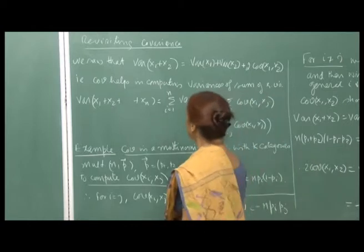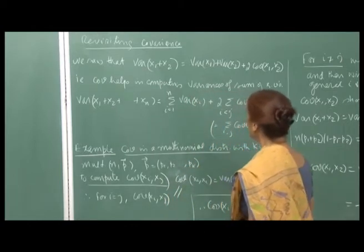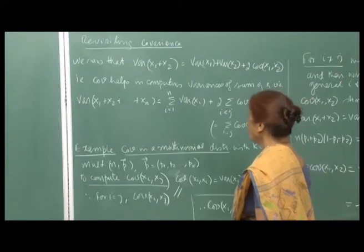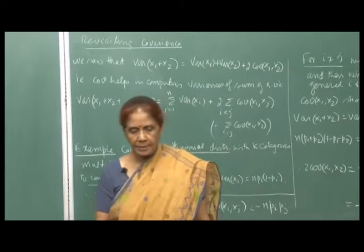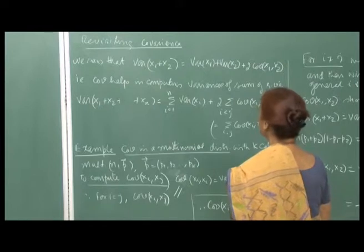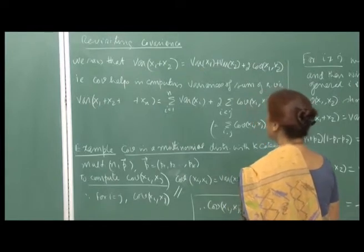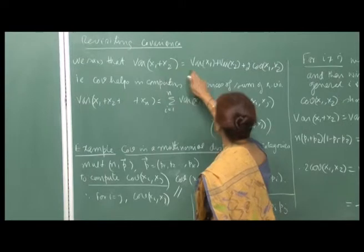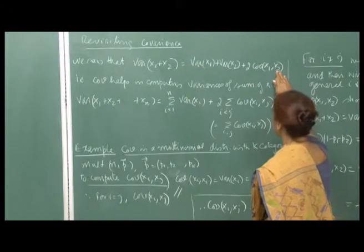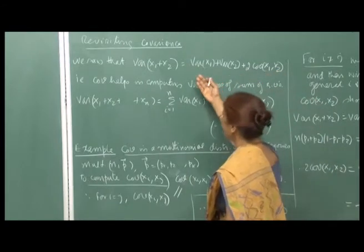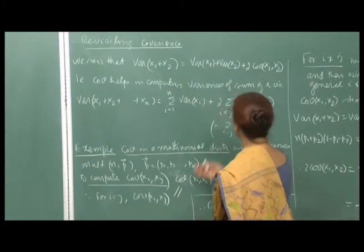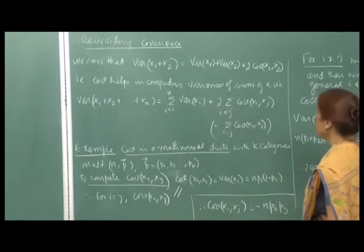In the last lecture, I defined covariance and also correlation, showing that correlation is simply the dimensionless version of covariance. Here are a few more uses of covariance. When you write Var(X1 + X2), the formula is Var(X1) + Var(X2) + 2·Cov(X1, X2). So in general, if X1 and X2 are not independent, you need Cov(X1, X2) to compute the variance of their sum.